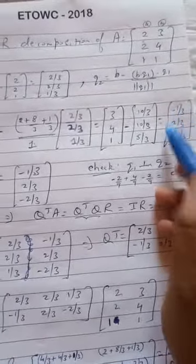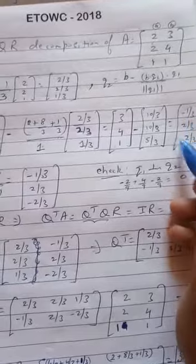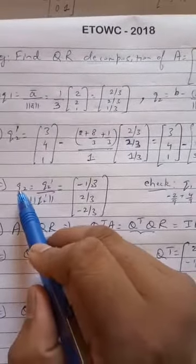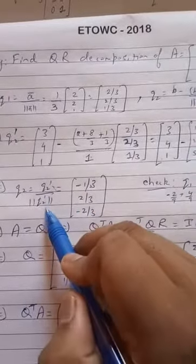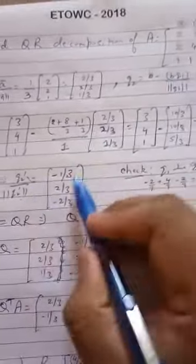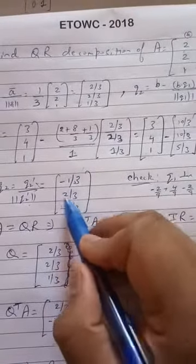However, as I told you, this is not orthonormal. So we need to orthonormalize it. So the way to do it is find Q2, which is nothing but Q2 dash, which we have found divided by the length of Q2 dash. Once you do that, the answer turns out to be minus 1 by 3, 2 by 3, 2 by 3.